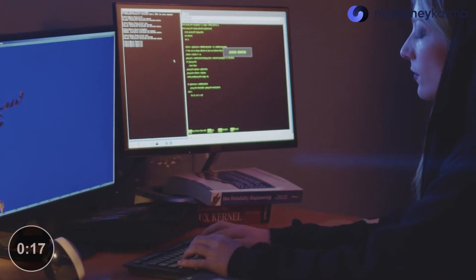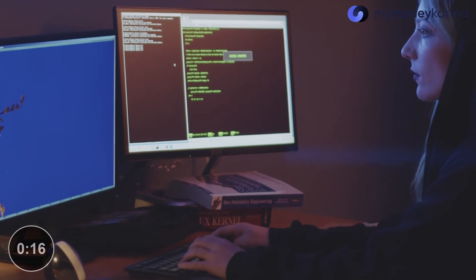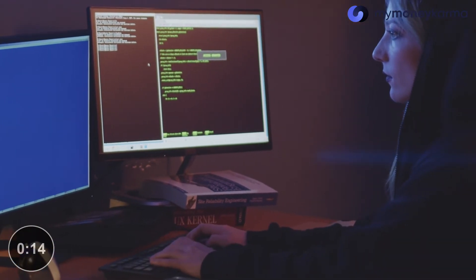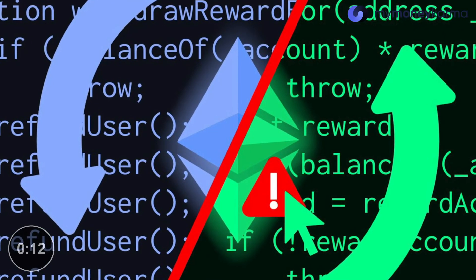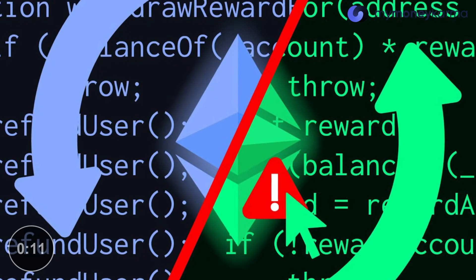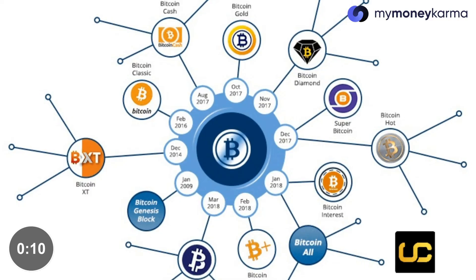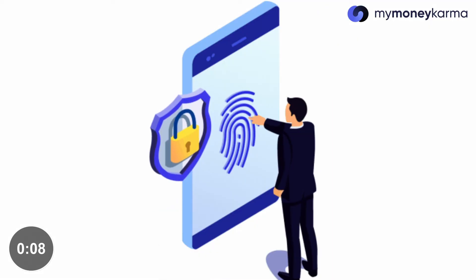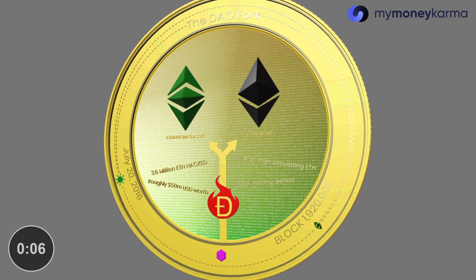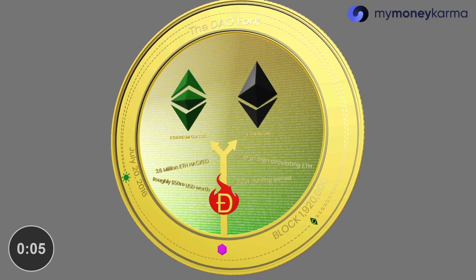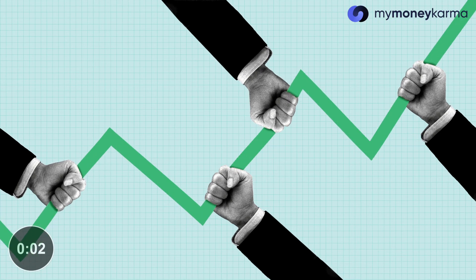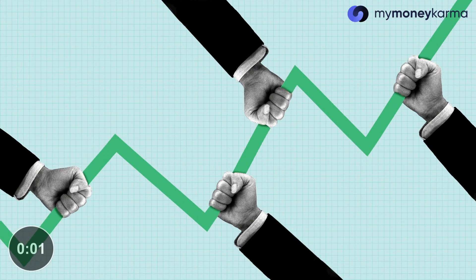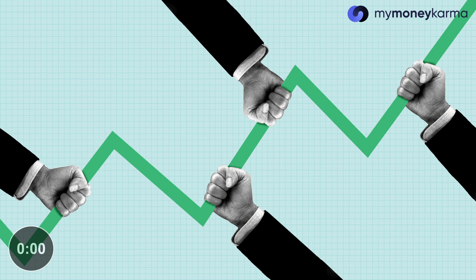There are a number of reasons why developers may implement a hard fork, such as correcting important security risks found in older versions of the software, to add new functionality, or to reverse transactions, as with the DAO hack on Ethereum. However, there can be periods of increased price volatility around such events.